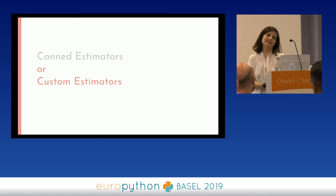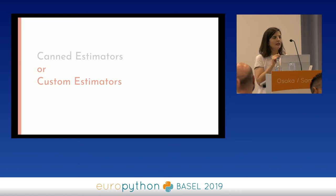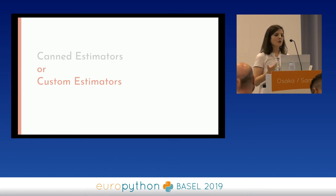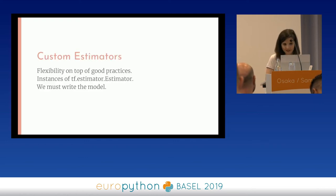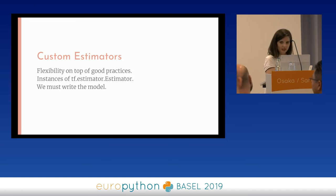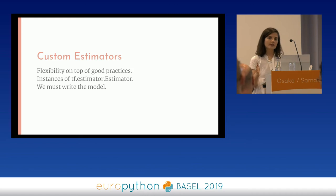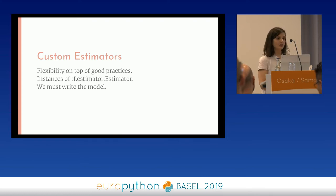However, what if your problem is not a linear regressor problem? Maybe you want to connect a neuron from the input to the output because you have an attention mechanism — maybe you want to be creative. Custom estimators allow us to be as flexible as we want, on top of good practices. We are bringing all the things we built in the estimator into a custom estimator. So when I go back to my code six months later, I know it will always follow the same structure. The only thing we need to do is instantiate the TF estimator and write a model function.